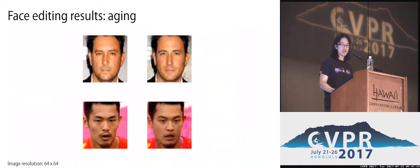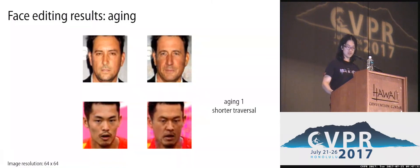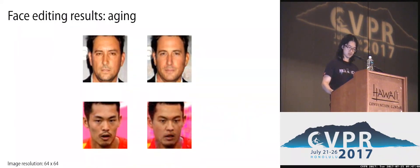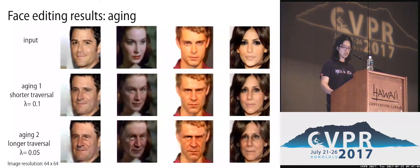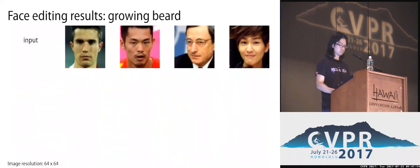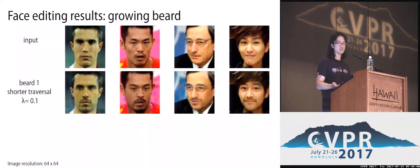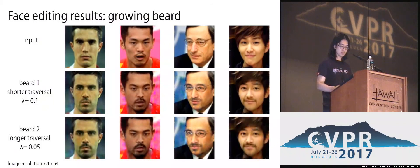Another face editing application where we fix the lighting but manipulate normals and texture is aging. By traversing the latent space along the aging direction, we can observe changes of geometry and texture on faces. Another example is facial hair, which differs from smiling or aging in that growing facial hair only relates to changes in texture. For this application, we only traverse the manifold of albedo.